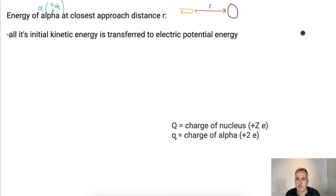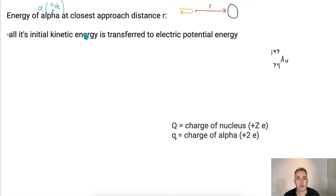For this gold nucleus — Au, 79 protons, 197 nucleons — the initial kinetic energy equals the electric potential energy at closest approach. So the initial kinetic energy is going to be fully transferred to electric potential energy at that point.